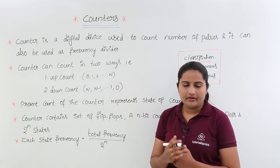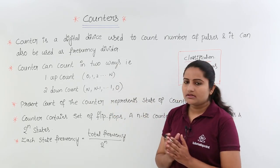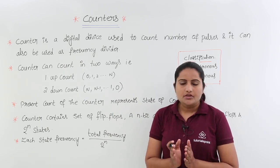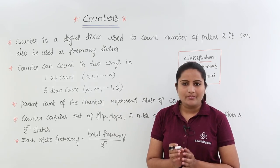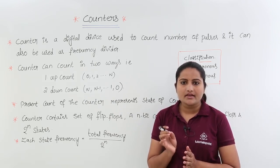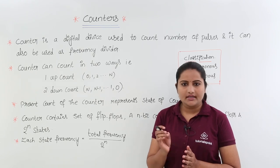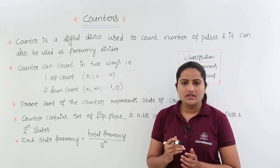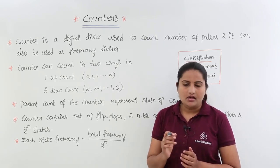The frequency division topic will be discussed later. Counter is generally used for counting purposes — it counts the number of clock pulses we are giving as input. For each state transition, we are taking one clock pulse, one clock cycle.